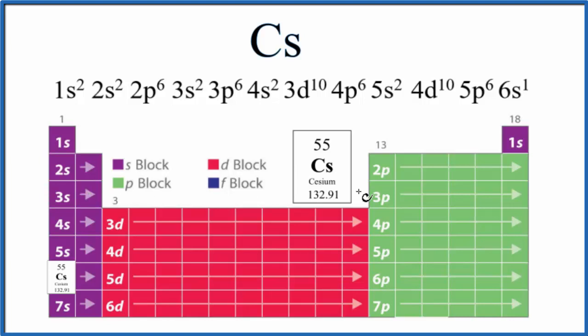We go to 3s2, 3p6, 4s2. And from 4s2, we're going to go to the 3d10 here. So we have 10 here, 4p6, 5s2.